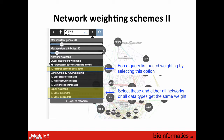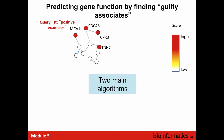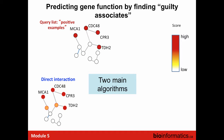Now I want to answer the question about guilt by association and whether the query gene has to be connected to all other query genes. Looking at this network: four red query genes are directly linked to some genes, indirectly linked to others, and completely unlinked to yet others. There are two main algorithms for guilt by association. Direct interaction returns genes that must be directly linked to the query genes.